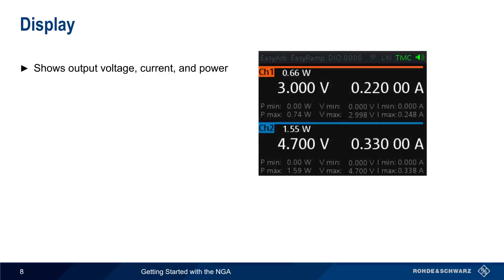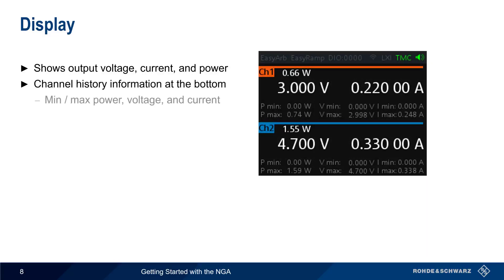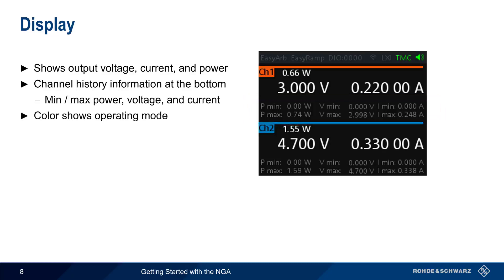The NGA displays the output voltage, output current, and output power updated in real time. For each channel, history information in the form of maximum and minimum values of power, voltage, and current are also shown. The color of the displayed values indicates the operating mode for each channel. White is used in editing mode, that is, when the output is disabled.